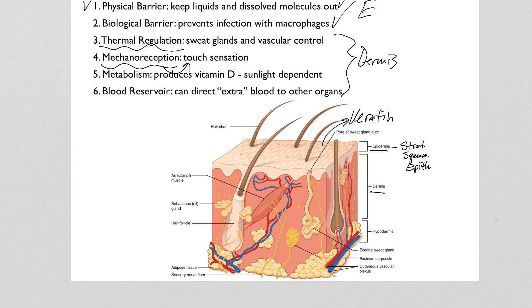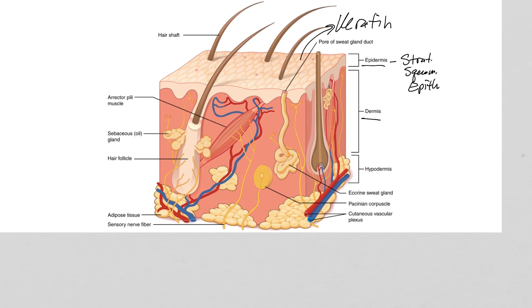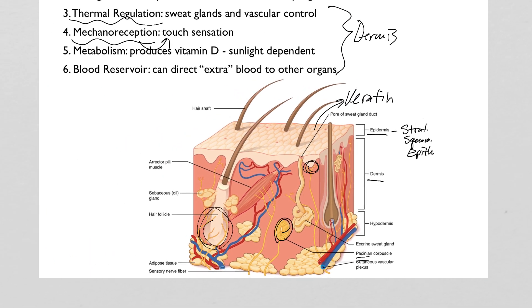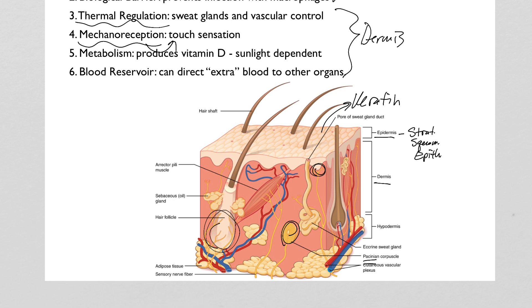Mechanoreception is detecting mechanical force — essentially touch — but there are multiple types of touch receptors in the dermis. Some, like Pacinian corpuscles, are buried deep and detect deep pressure and pain. Others are free nerve endings that wrap around hair follicles so you can feel movement of the hair. Still others are free nerve endings near the epidermis that detect fine touch near the surface. All of these mechanoreceptors connect to sensory nerve fibers that travel back to the spinal cord and brain.